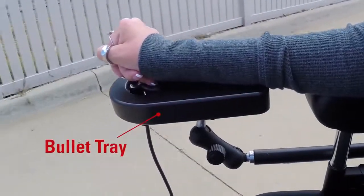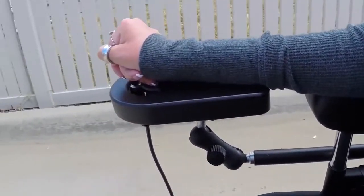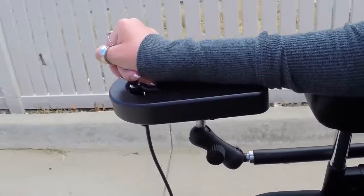The bullet tray is intended to support the user's hand while driving with the MicroPilot or MicroGuide joysticks.